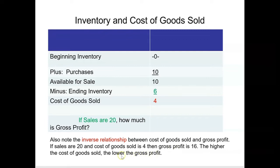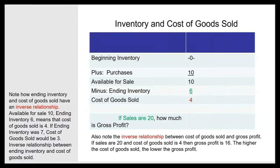The higher the cost of goods sold, the lower the gross profit. So if cost of goods sold was suddenly five, then gross profit would only be 15 instead of 16. Also note that ending inventory and cost of goods sold have an inverse relationship. Available for sale is 10, ending inventory is six, so cost of goods sold is four. But if ending inventory was seven dollars instead, cost of goods sold would be three dollars.